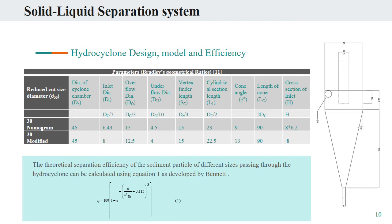For determining the theoretical separation efficiency of particles of different sizes that pass through the hydrocyclone, Equation 1 developed by Bennett is used. Here the term D represents the different size particles taken into the study, and D50 represents the reduced cut size diameter, which is 19 microns.